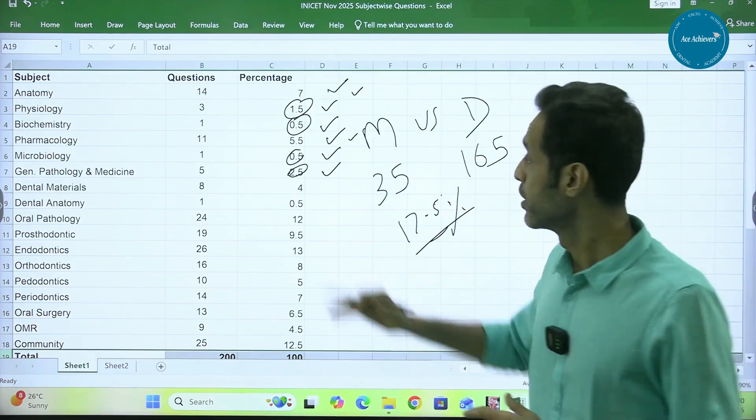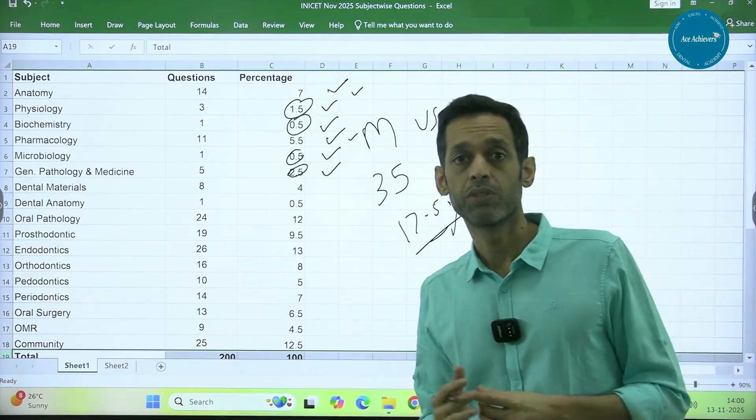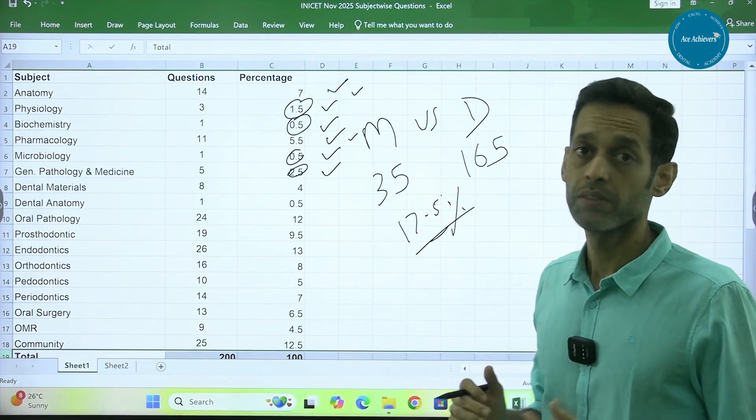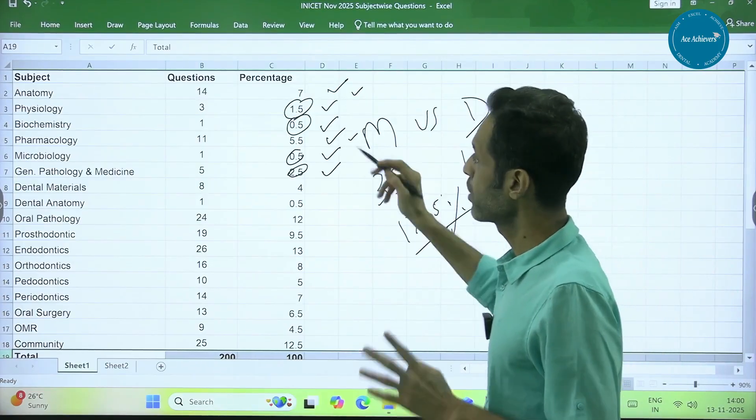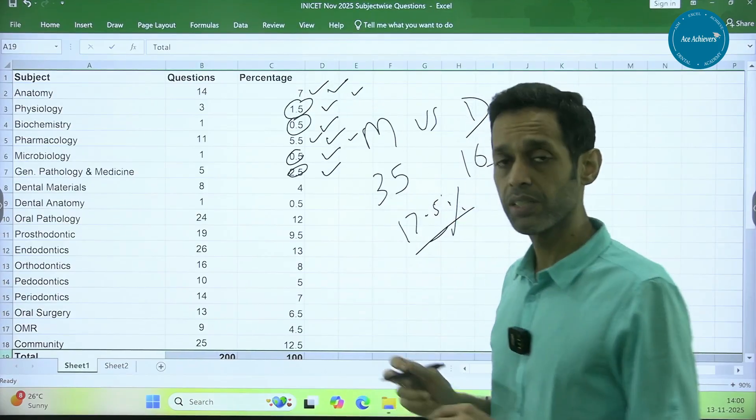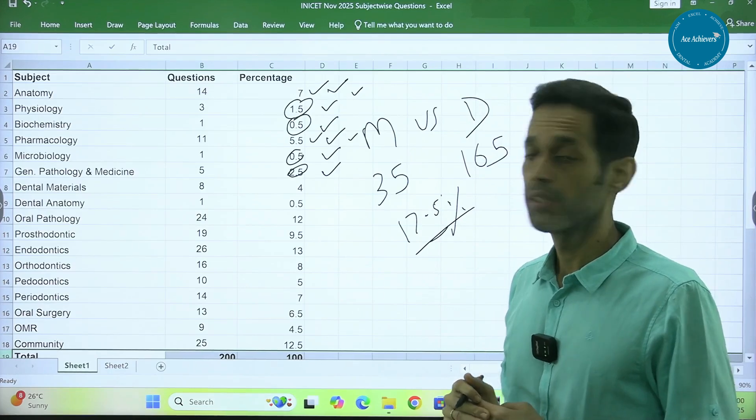At the same time, you can't leave the other subjects altogether. Someday it has to change. You never know which exam it will change. You should not be caught unawares. So right now, yes, anatomy and Pharmac contributing around 7% and 5.5% respectively into the paper.